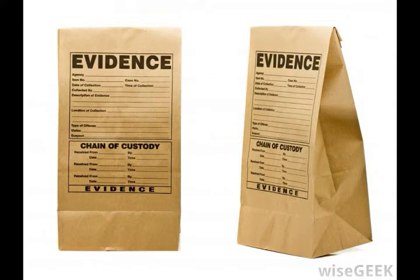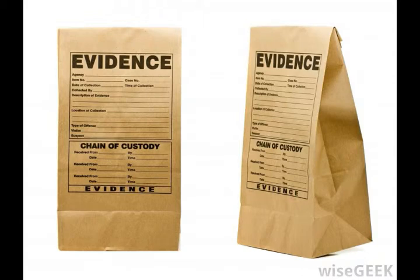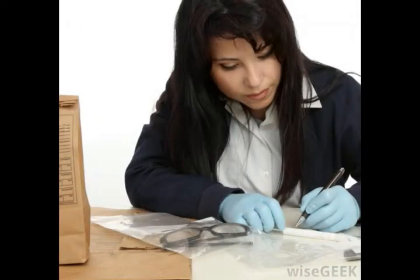Lack of evidence can happen for a number of reasons. Sometimes a party may have evidence, but it may be inadmissible due to various rules of evidence. For example, if the police illegally searched someone's home without a warrant, any evidence discovered in that search would be barred from being presented to or considered by the judge or jury. In addition, under the rule called fruit of the poisonous tree, any evidence that law enforcement officials collected as a result of information obtained from an illegal confession or search would also be inadmissible. This can result in a lack of evidence.